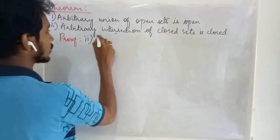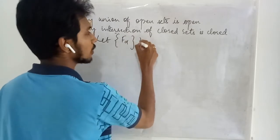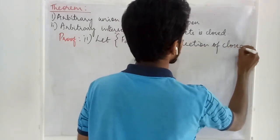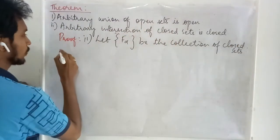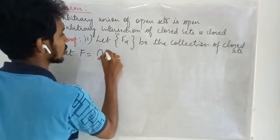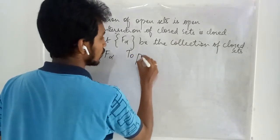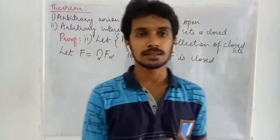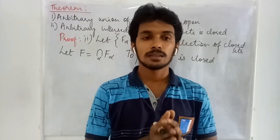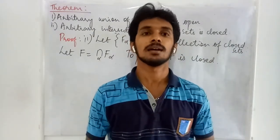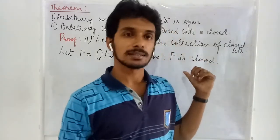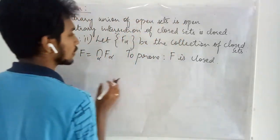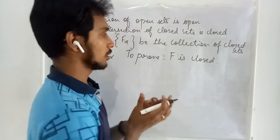Let F_alpha be the collection of closed sets. Let F be the intersection of this F_alpha. We need to prove that F is closed. In order to prove a set is closed, we can either say that every limit point of this set is present in it, or we can say the complement of this set is open. Two ways are possible; the second one is the better option here.